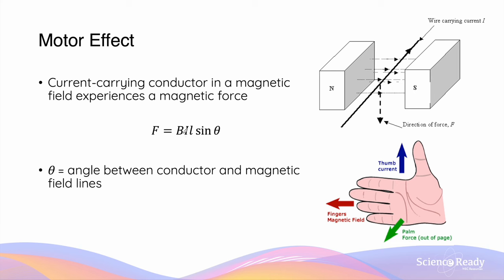B is the magnetic field strength. I is the magnitude of current flowing through the conductor. L is the length of the conductor inside the magnetic field. The angle theta refers to the angle between the conductor and the direction of the magnetic field.